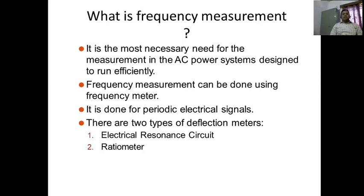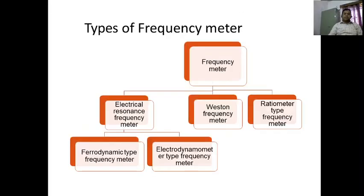We have studied Maximum Demand Indicator and now we are studying frequency measurement. Frequency measurement can be done using a frequency meter, and it is done for periodic electrical signals also. There are two types of deflection meters: one is the electric resonant circuit and the other is the ratio meter. The frequency meter is classified into three types: electrical resonance frequency meter, Weston frequency meter, and ratio meter type frequency meter.